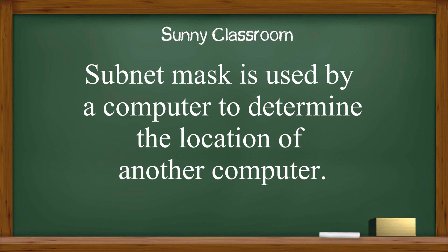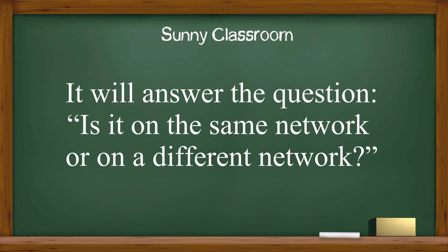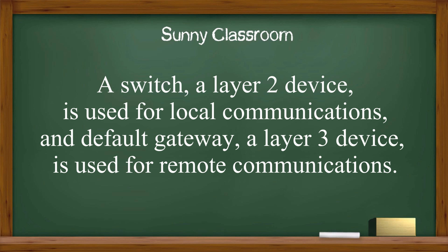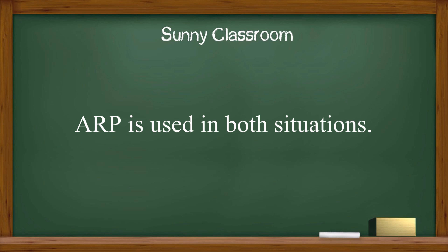In summary: the subnet mask is used by a computer to determine the location of another destination computer — is it on the same network or a different network? The MAC address is used for local communications, while the IP address is used for remote communications. A switch, a layer 2 device, is used for local communications, and a default gateway, a layer 3 device, is used for remote communications. The ARP program is used in both situations.